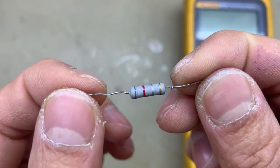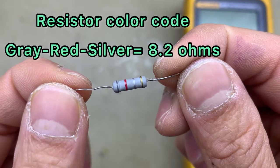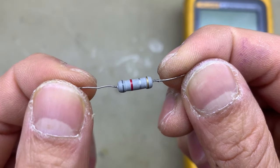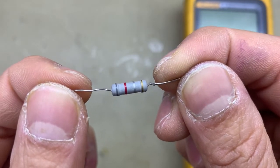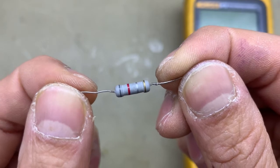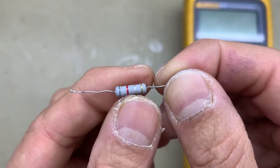The color is gray, red, and the third one is silver. The third one is the multiplier, the silver. So the value is 8.2 ohms. Let's start the test.